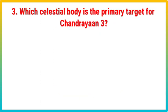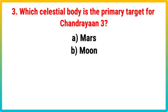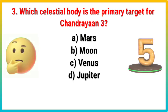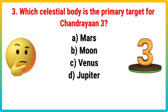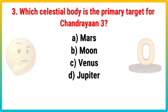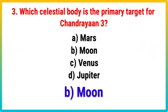Question 3. Which celestial body is the primary target for Chandrayaan-3? Your options: A. Mars, B. Moon, C. Venus, D. Jupiter. Correct answer is B. Moon.